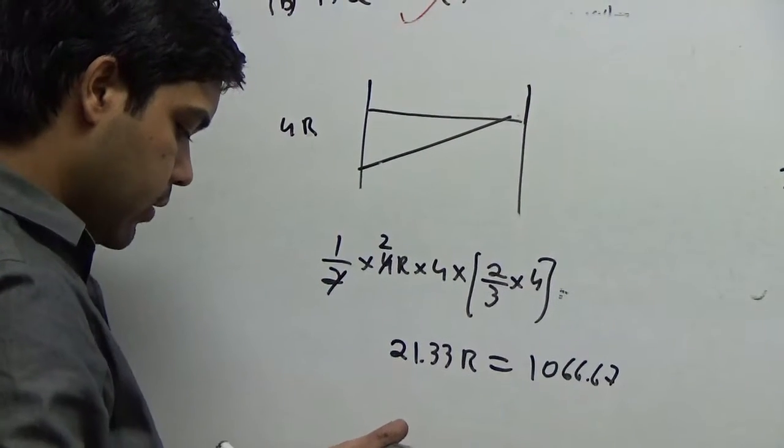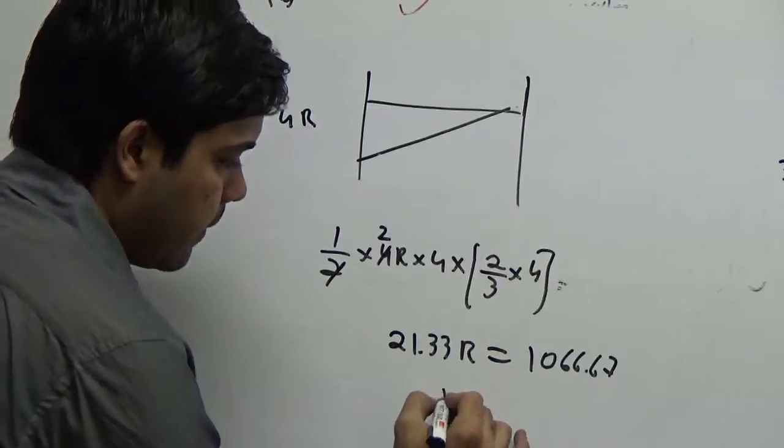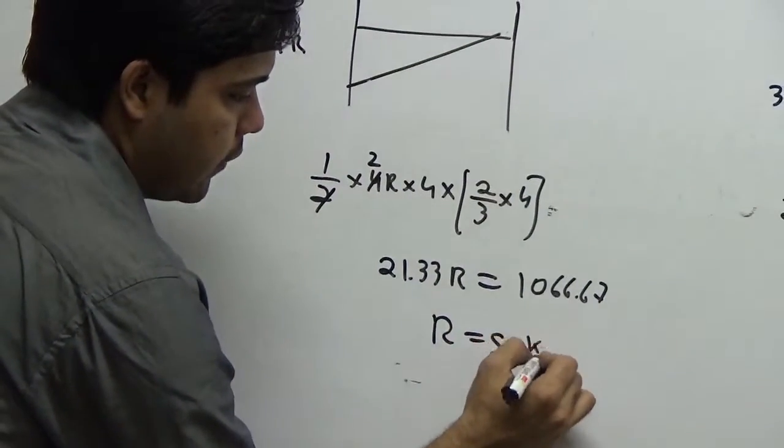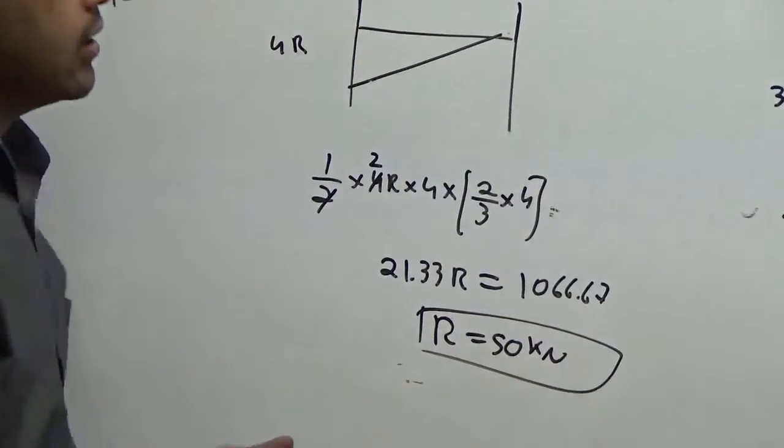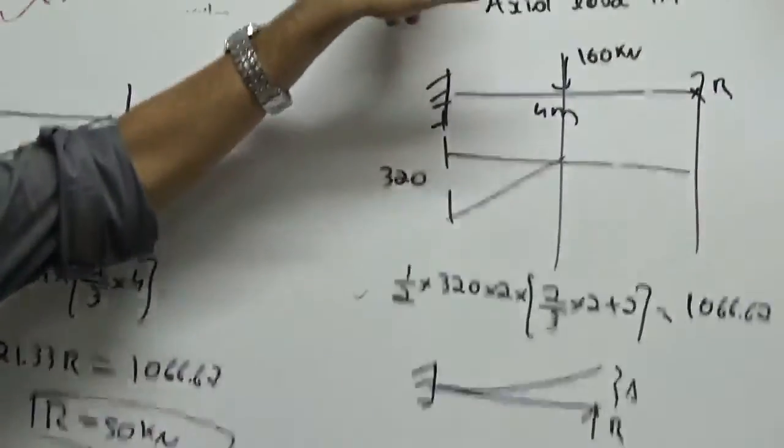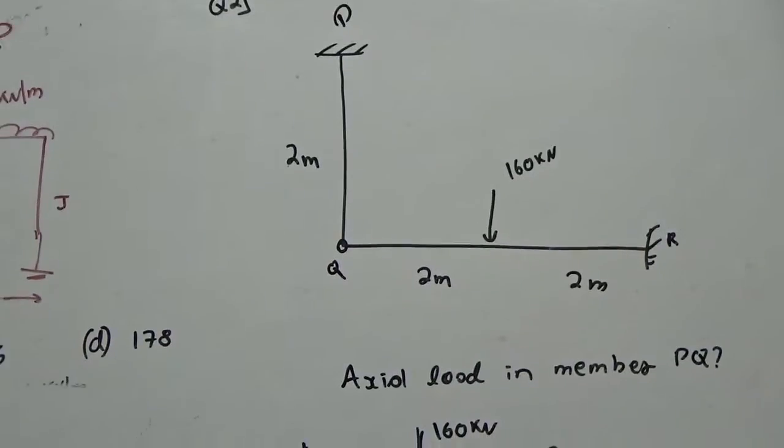So your answer comes out to be 50. So your answer is 50 kN is the axial load for the member PQ. I hope there is no doubt in this. So the next problem.